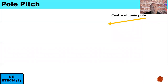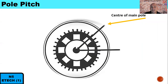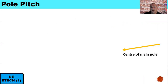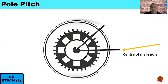Our first concept is called Pole Pitch. Pole Pitch is the distance between the centers of the main poles — from the center of one line running from a main pole to the center of the other line on the second main pole. The distance between them is known as Pole Pitch.